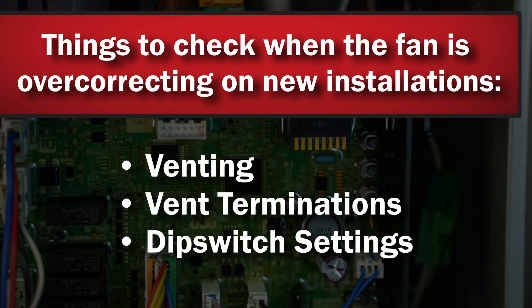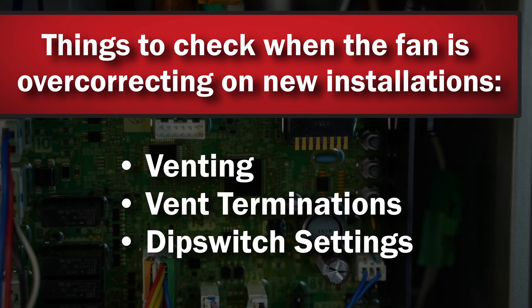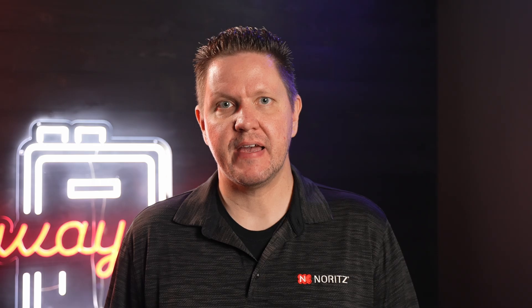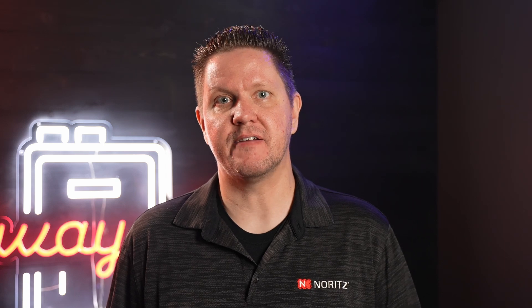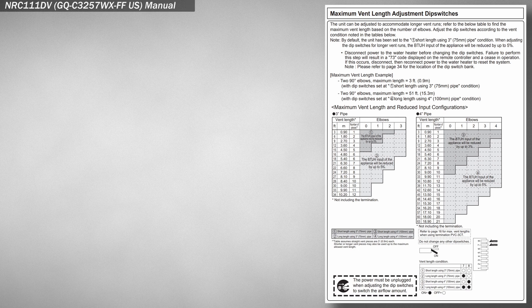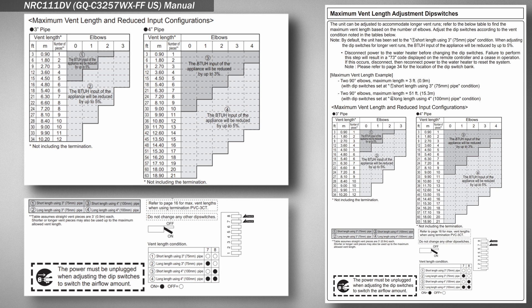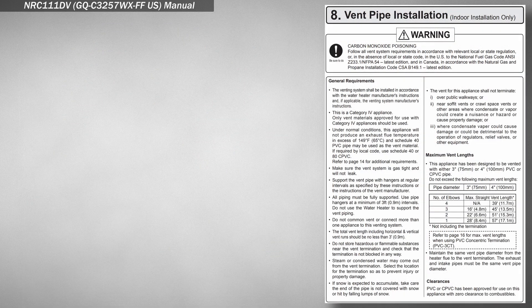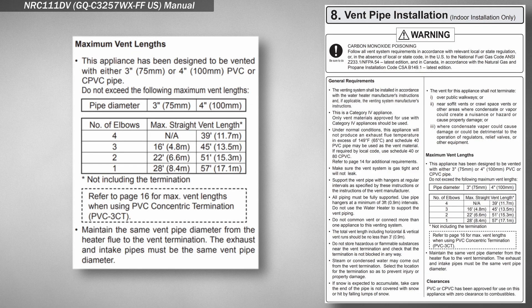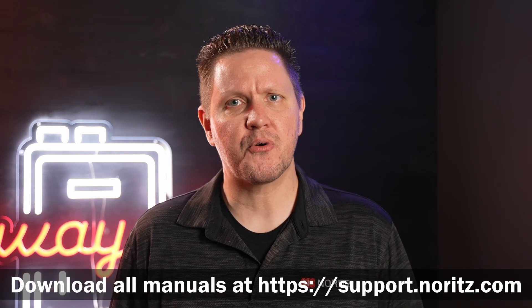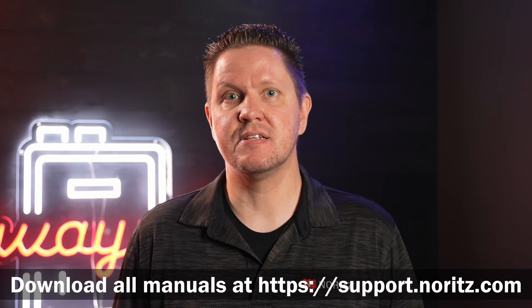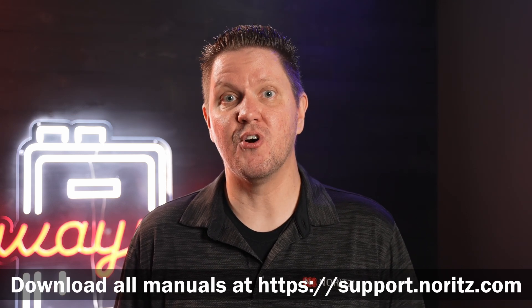For new installations that show the fan is overcorrecting, you'd want to check all things related to the venting, termination, and dip switch settings. An overcorrecting fan is the heater's way of telling you it can't breathe properly, so you need to check all aspects that affect the unit's ability to pull in fresh air or remove the exhaust. Depending on the size, length, and number of elbows used in the venting, certain dip switches in the unit will need to be turned on. Make sure that the size and length of venting used falls within the acceptable lengths allowed in the installation manual. There is no combination of dip switch settings that can correct for a vent that is too small a diameter, too long, or has too many elbows. That's why it's incredibly important to read the manual before installation so you are aware of everything needed to perform a correct installation.